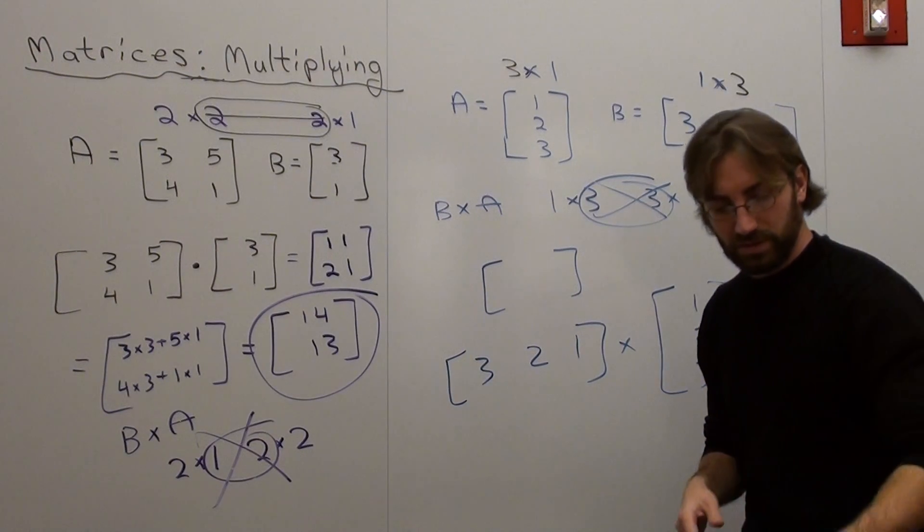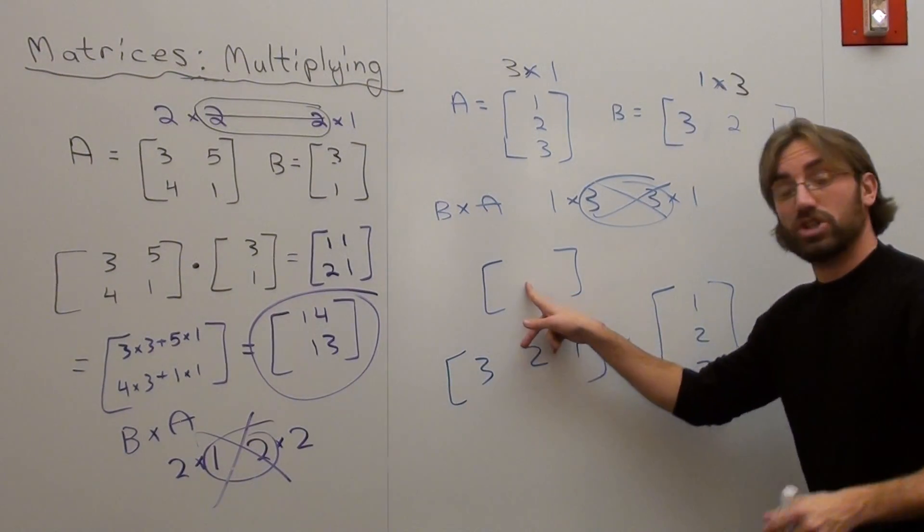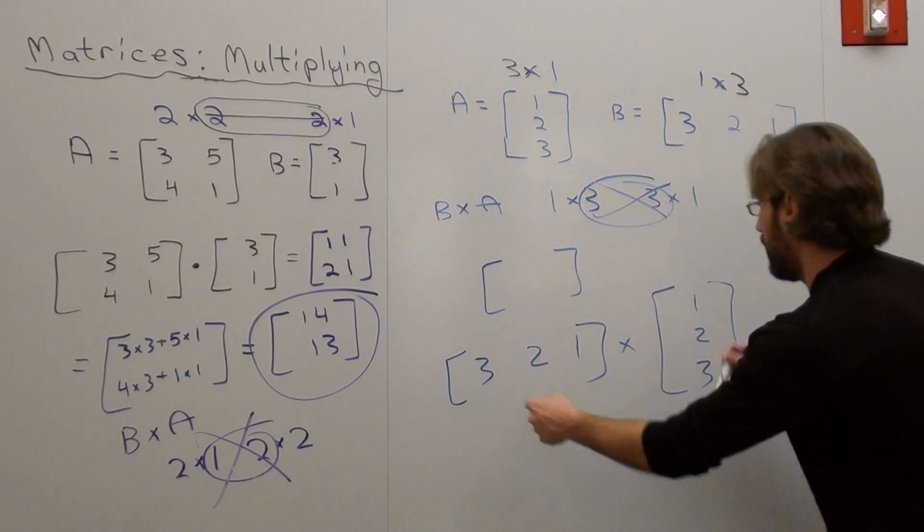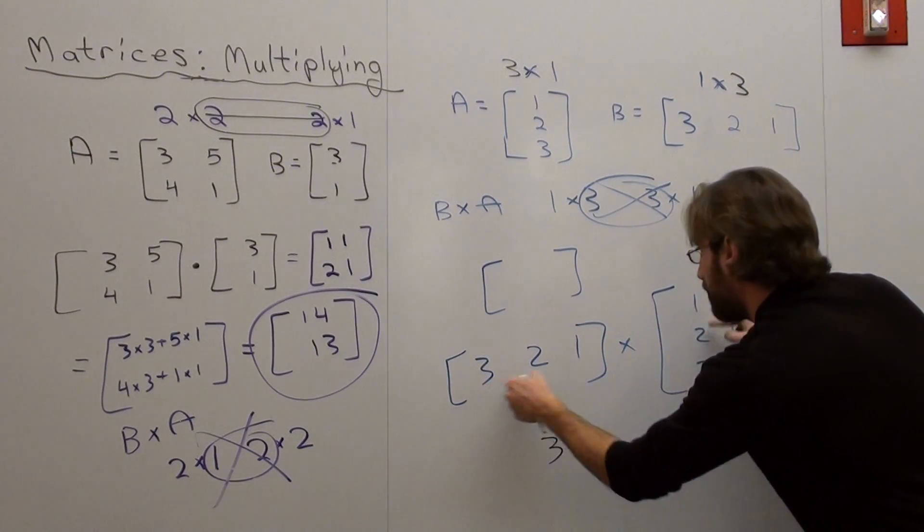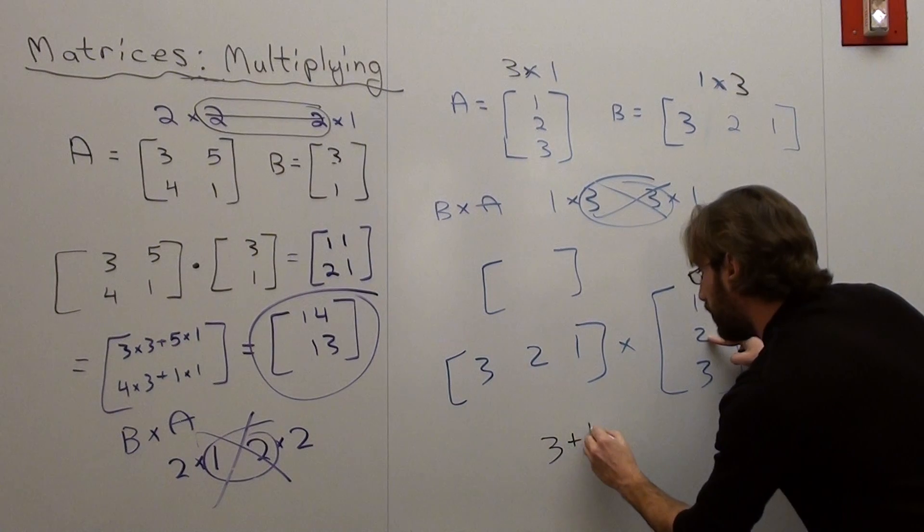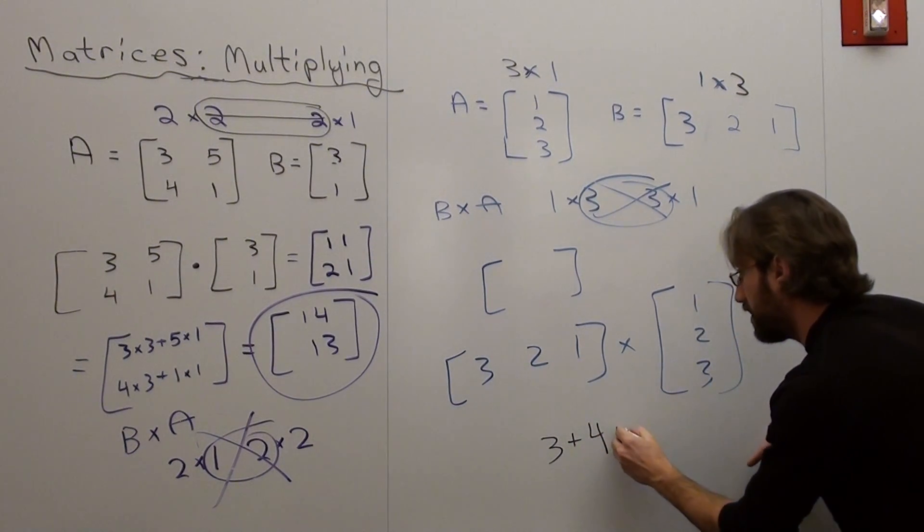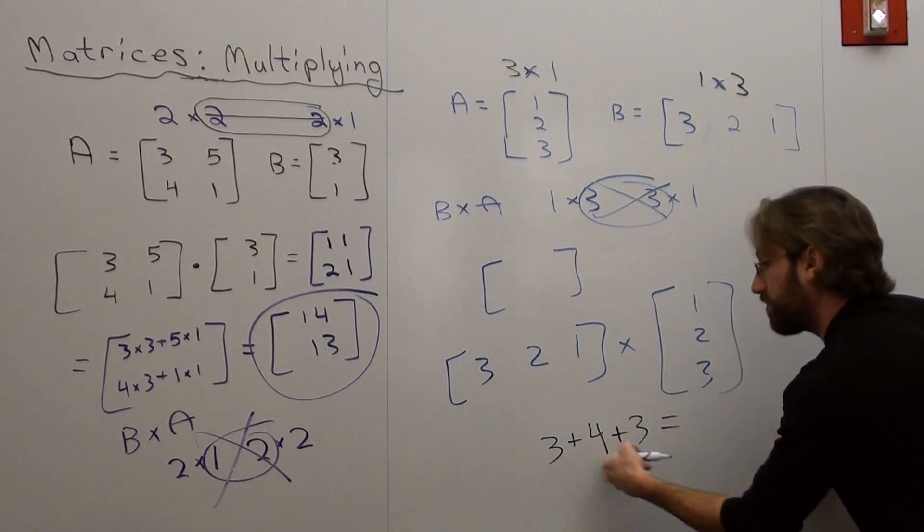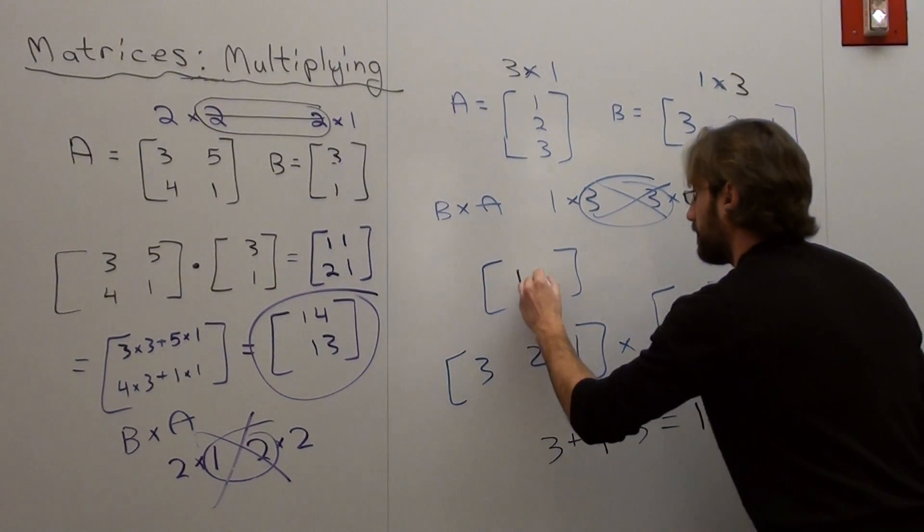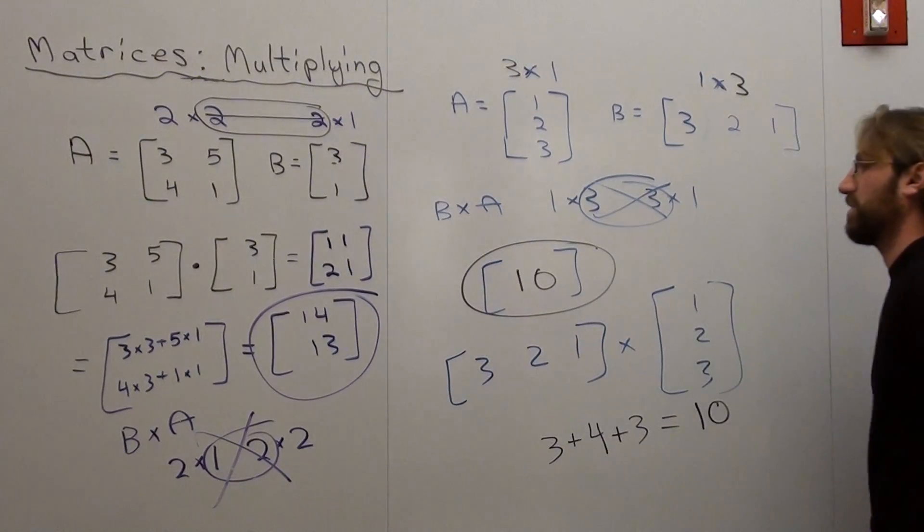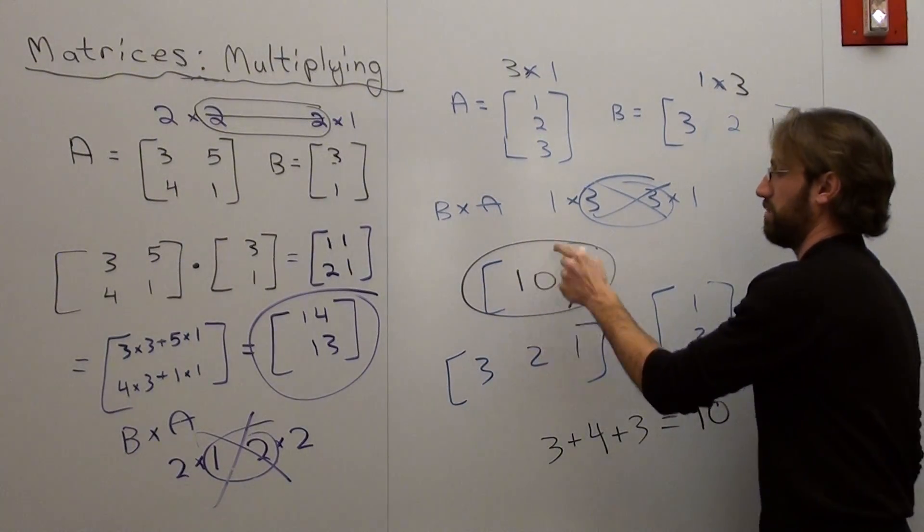In order to do that correctly, I'm going to have to write it down. 3, 2, 1 times 2, 3. So here we go. I'm telling you, it's just a 1 by 1 matrix, there's only one element there. 3 times 1 is 3, plus 2 times 2, which is 4, plus 1 times 3, which is 3. 3 plus 4 plus 3 is 10. That is my answer when I take B times A, just the matrix type.